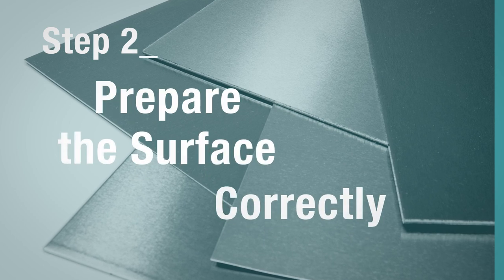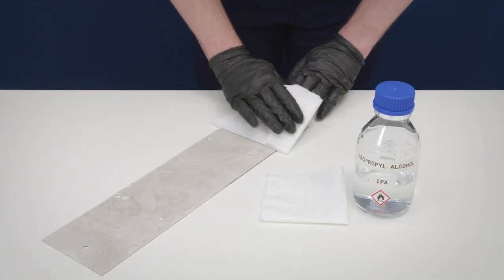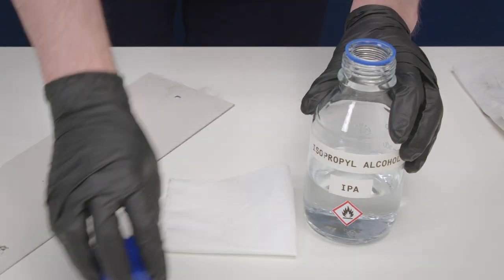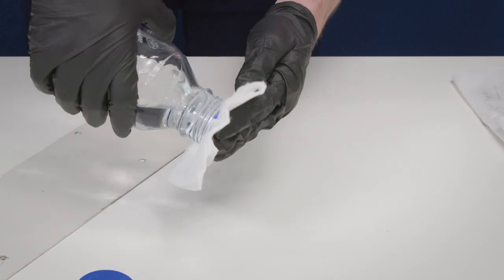Step 2: Prepare the surface correctly. When bonding aluminium, you must always clean the surface prior to bonding. If aluminium has heavy contamination, use IPA to degrease the surface.